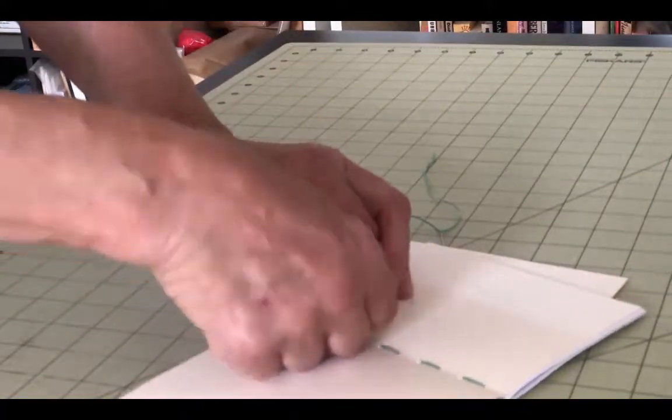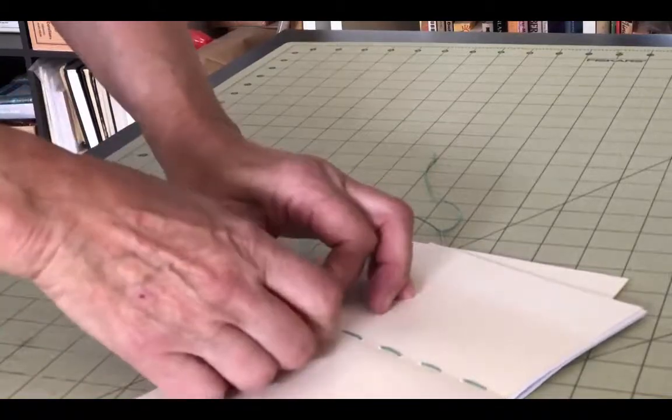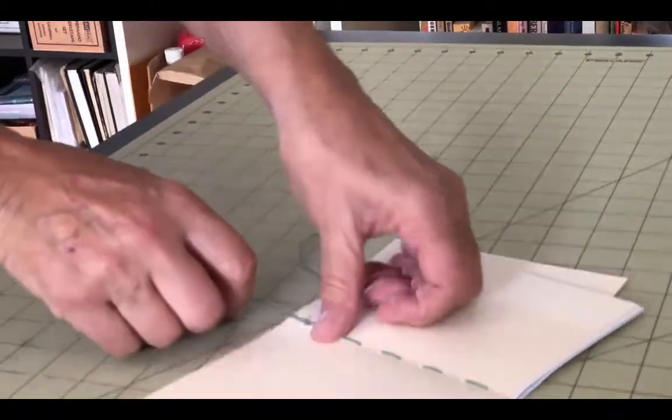You can see now why you want to leave a long tail here when you first start sewing. If it's much shorter than this, it would be pretty hard to manage.